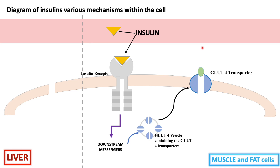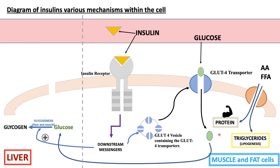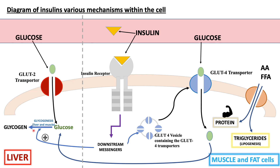This allows glucose from the blood to enter into the cell, which helps bring down our blood glucose levels. The secondary messengers also play a role with this transporter, allowing amino acids and fatty acids to enter into the cell. This enables protein synthesis within the muscle and lipogenesis in the fat cell. Glucose will also go into storage via glycogenesis — glucose to glycogen — which occurs in the liver and the muscle as well.